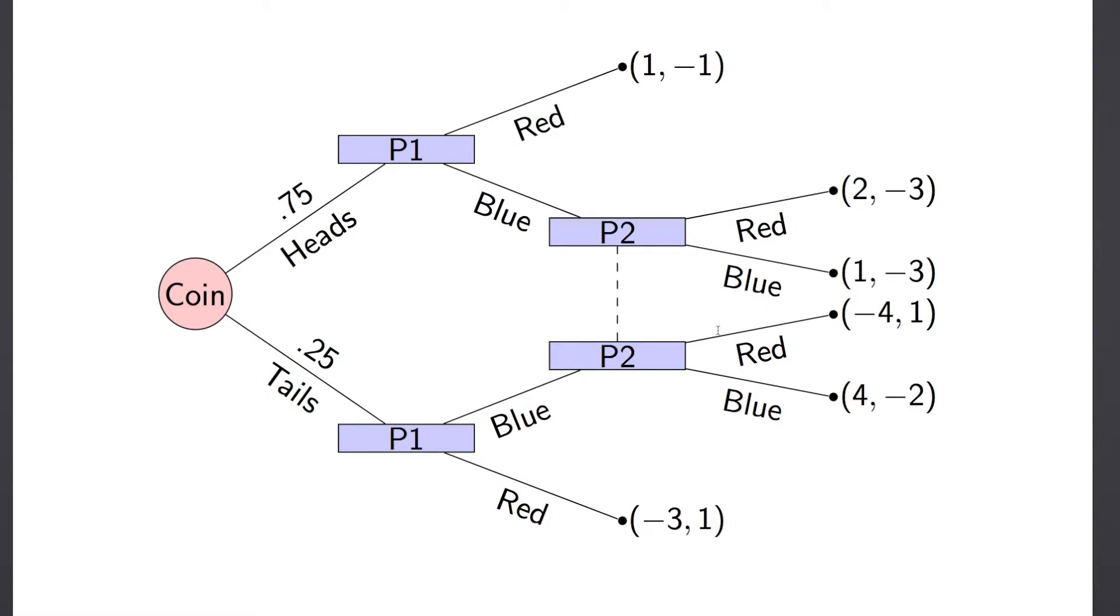Now, normally in this type of game we'd like to use backwards induction, but we can't because of this information set here. So what we have to do is get the corresponding normal form representation of the game.